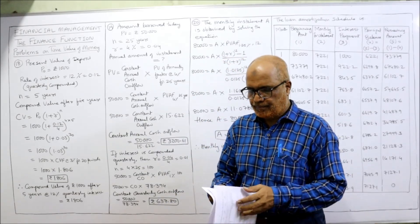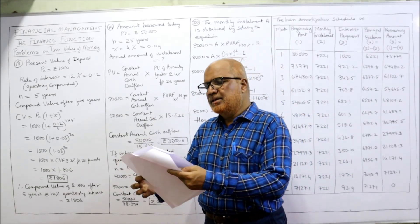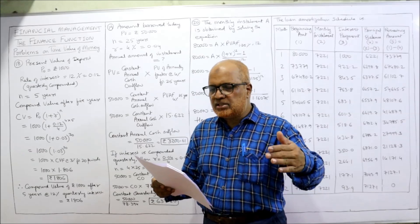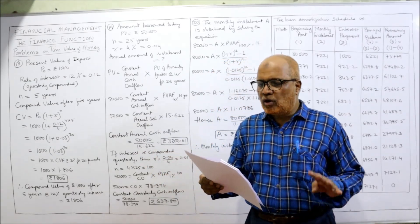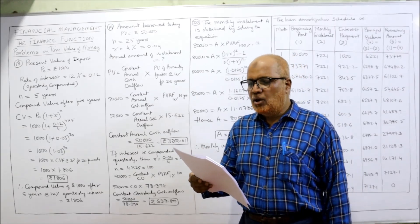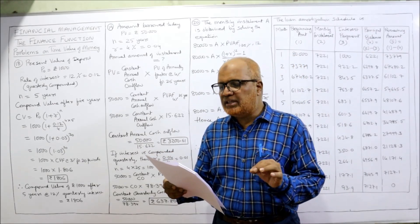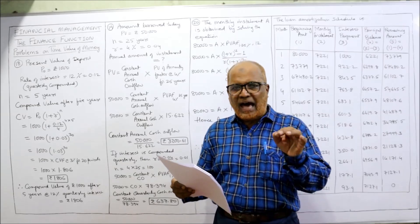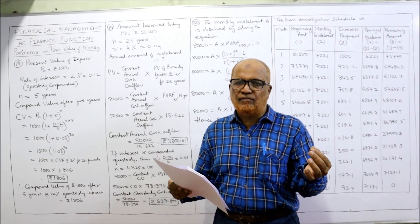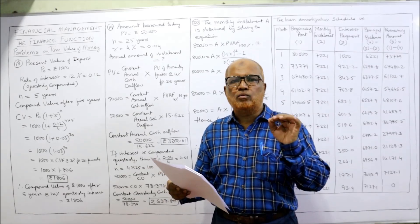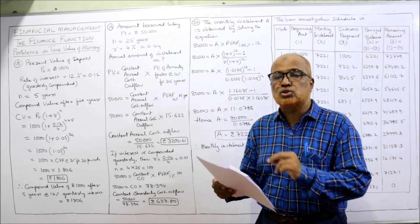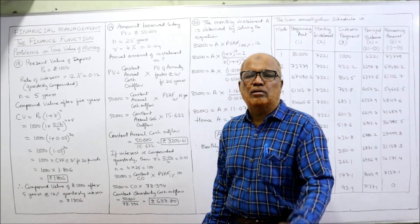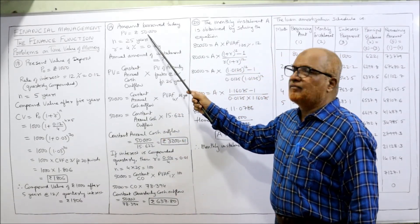Now the 19th problem: Mr. X is borrowing 50,000 to buy a low-income group house. If he pays equal installments for 25 years at 4% interest on the outstanding balance, what is the amount of installment? Two questions: if annual installments are paid, what is the annual installment? If quarterly installments are paid, what is the quarterly amount? For 25 years, rate of interest is 4%, and the present value of the loan is 50,000.